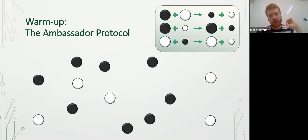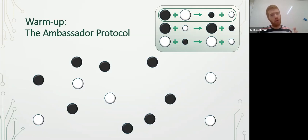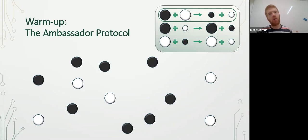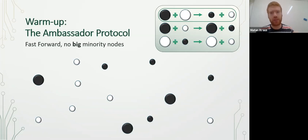All the nodes start as big nodes. The only rule that has two big nodes as input is the first rule, which says that when two different-color big nodes interact, they both become small. By the first rule, after enough interactions, there will be no more minority big nodes. However, there will always be at least one majority big node.